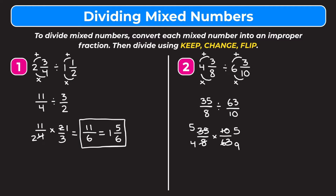Multiplying straight across: five times five gives us twenty-five on top, and four times nine gives us thirty-six on the bottom. Because we fully simplified and cross-reduced, we don't need to simplify at the end, so we get twenty-five thirty-sixths.